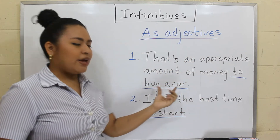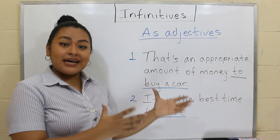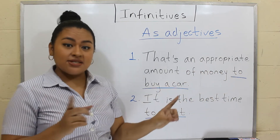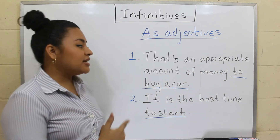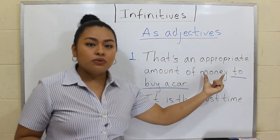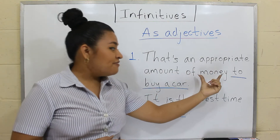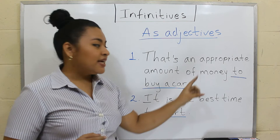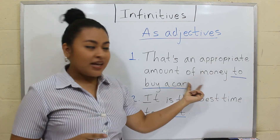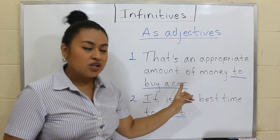Here we have some other examples. 'That's an appropriate amount of money to buy a car.' In here we have an infinitive phrase that is acting as an adjective: 'to buy a car.' That is the infinitive phrase, and it is modifying the noun 'amount.' But you may wonder — what about 'money'? Why is this infinitive phrase not modifying the noun 'money'? In this case, 'money' is the object of the preposition 'of,' and this prepositional phrase is modifying the noun 'amount.' So the infinitive phrase is modifying 'amount.'